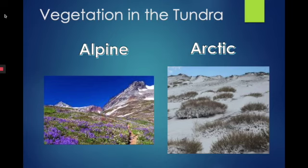Now let's look at the arctic tundra. The plants are small, they live close together, and they are low to the ground. All of these traits help them to survive in the harsh conditions they experience. Some examples are mosses and lichens.